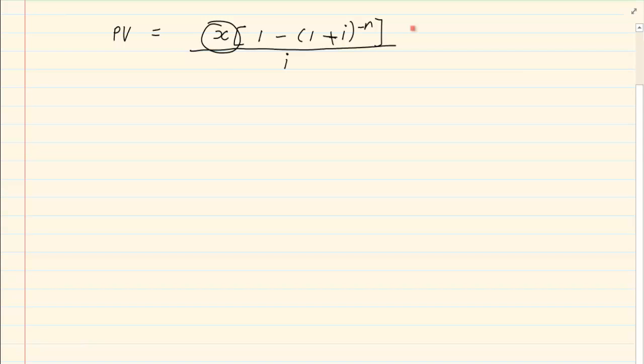In order to get x alone, you are going to have to times it by i so that the i's can cancel out, and what you do on one side you do on the other side. So we would have PV times i equals x into 1 minus (1 plus i) to the power of n.